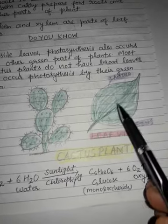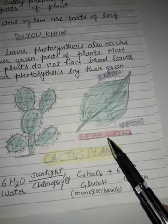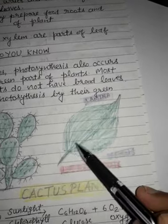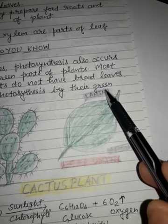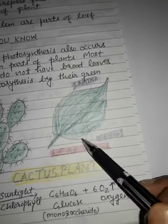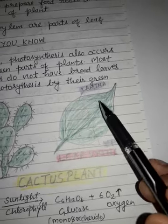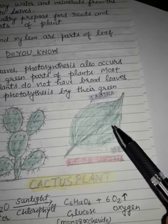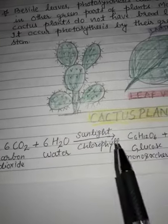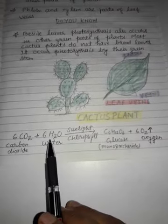And here is the leaf veins diagram. This is the lamina and these are the veins. Veins contain xylem and phloem. The reaction of photosynthesis is given below.